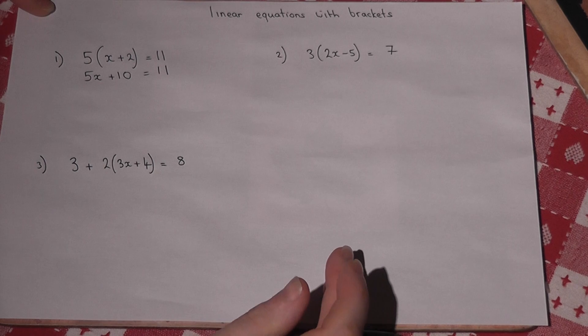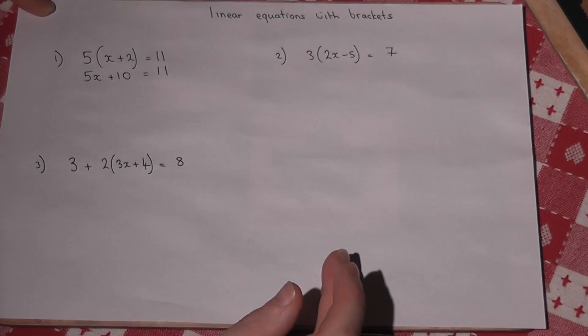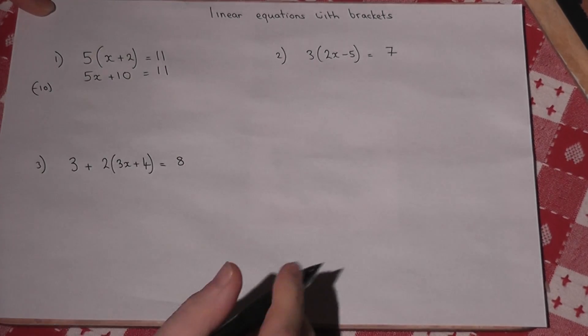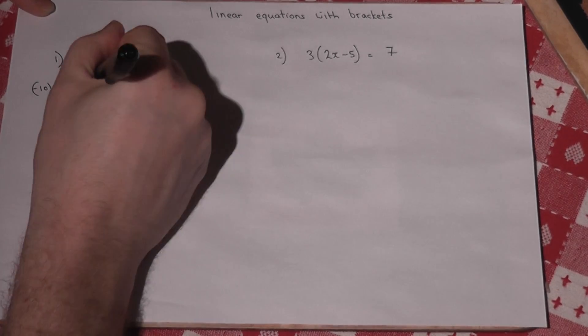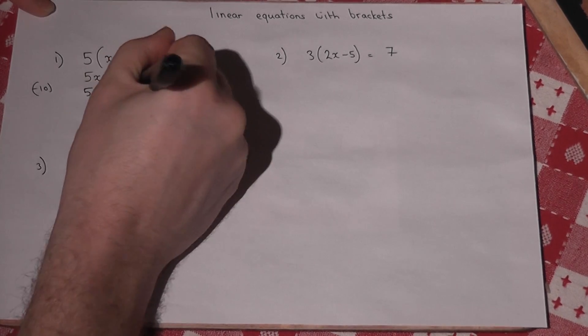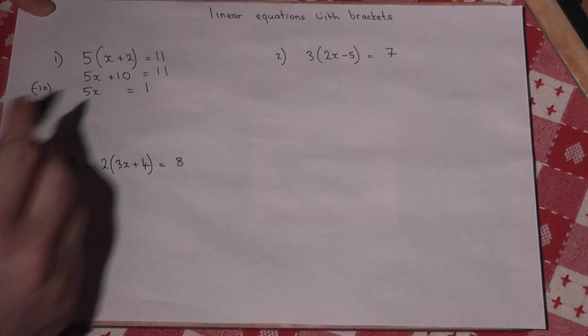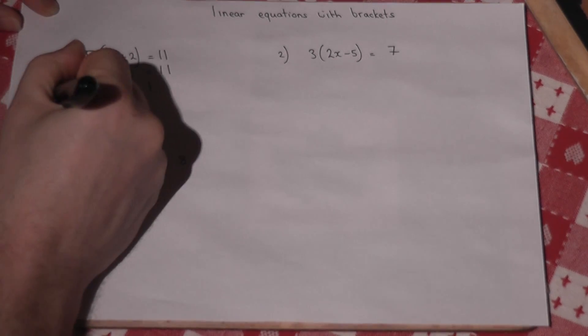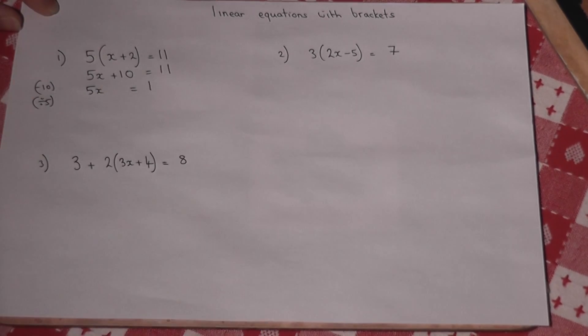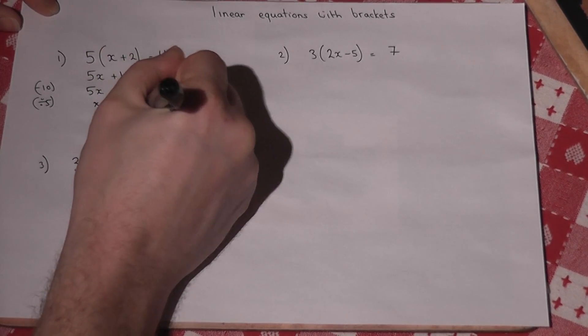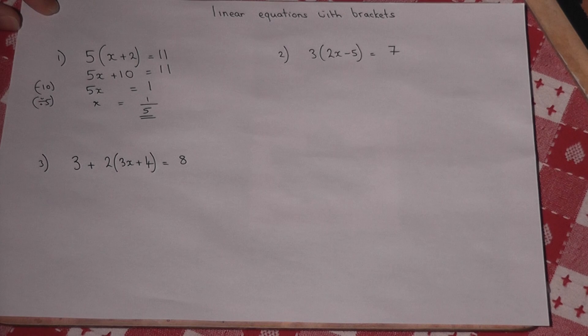We then use our normal equation solving techniques to get x equals. So I first of all take away that 10 to cancel it out. So 5x will equal 11 take away 10, which is 1. And then divide by 5. So x will equal 1 divided by 5, or 1 fifth, a fraction.